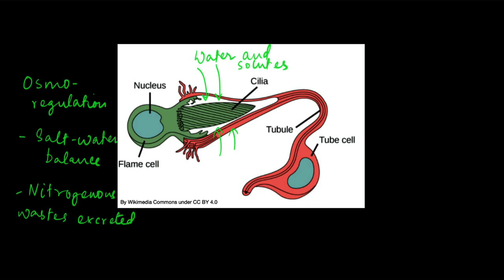So this was the excretory system. Now let's look at how reproduction happens in platyhelminths. We'll actually take a look at the reproduction very briefly. So every flatworm is a hermaphrodite. That means each individual is both male and female. So the fertilization happens inside the body of the worm.